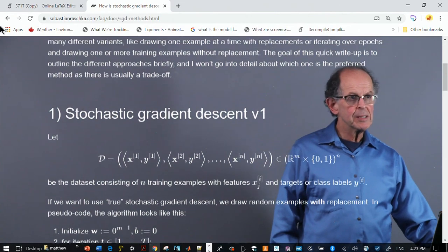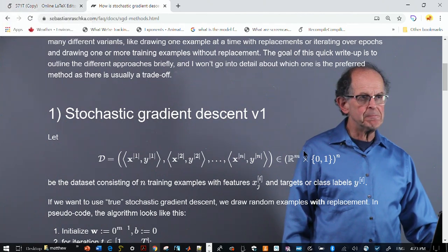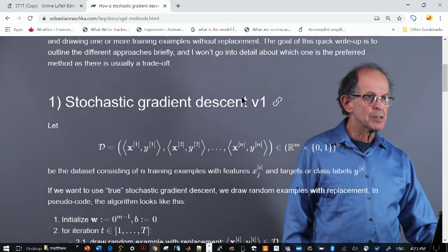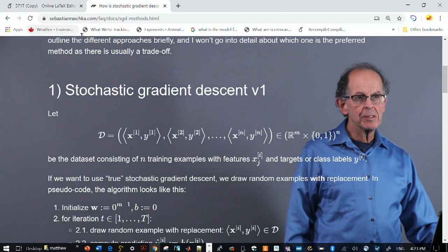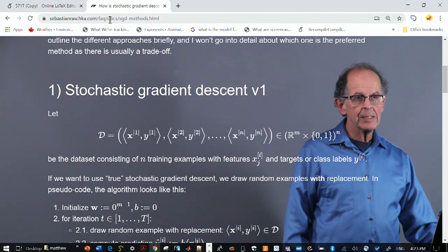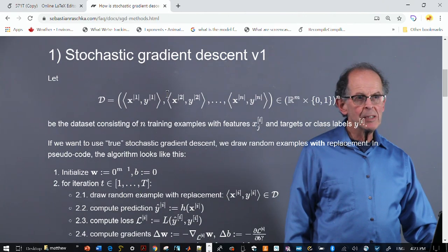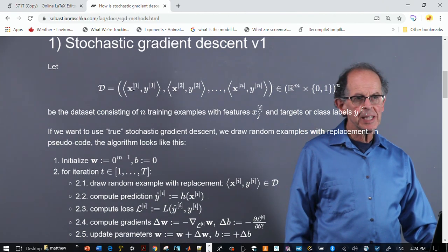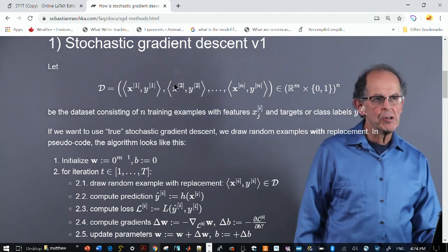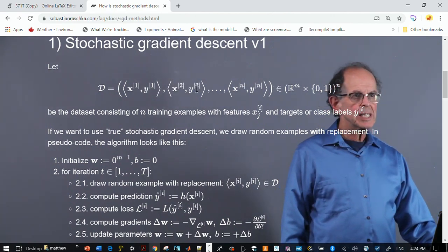So let's begin with version one of stochastic gradient descent. Before we start, you can see the HTML reference right at the top. So we have multiple data. We have data X1, label Y1, and so on. And we have N data sets.